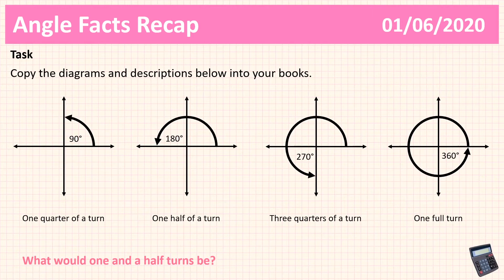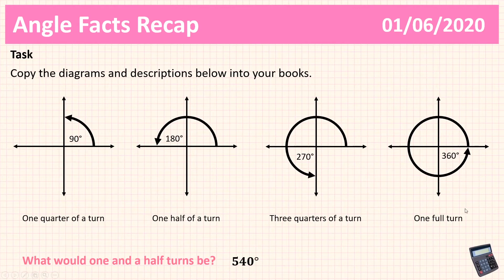So one and a half turns. We know one turn is 360 degrees. We know half a turn is 180 degrees, so if I want to do one and a half turns I need to add 360 to 180 and I get 540. So one and a half turns is 540 degrees. We can use this information to work out any value of any turns. The most important ones for this lesson are going to be what half a turn and one full turn are.